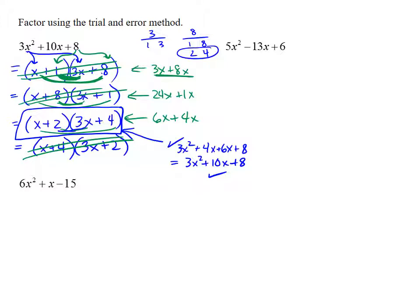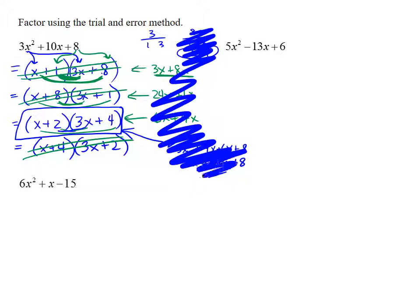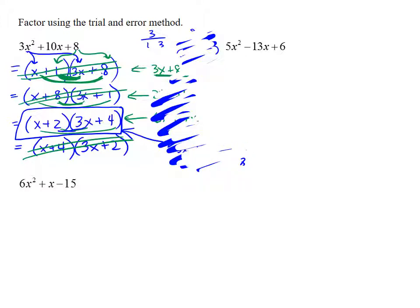All right, so let's go on to the next example. Because I've kind of made a mess, I'm going to erase some of this here. So let's try this out, this next example: 5x² - 13x + 6. We're going to use a binomial times a binomial again.